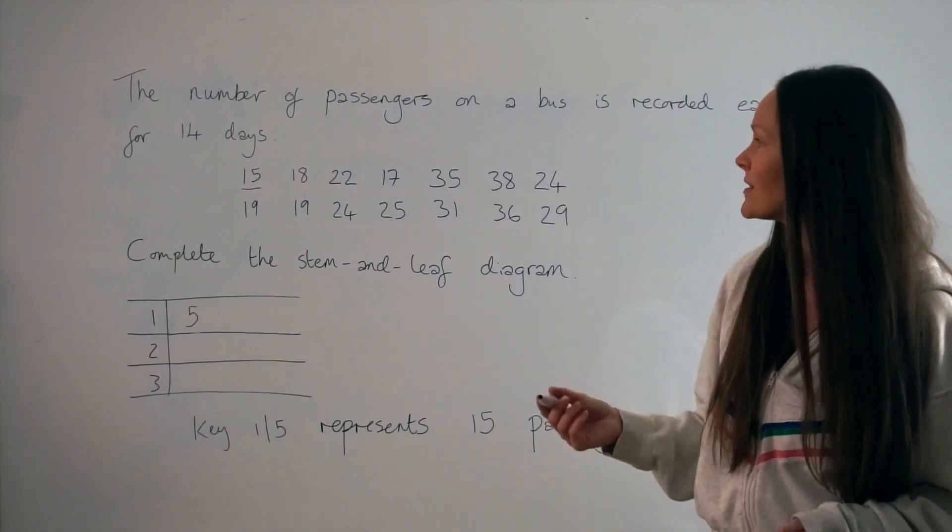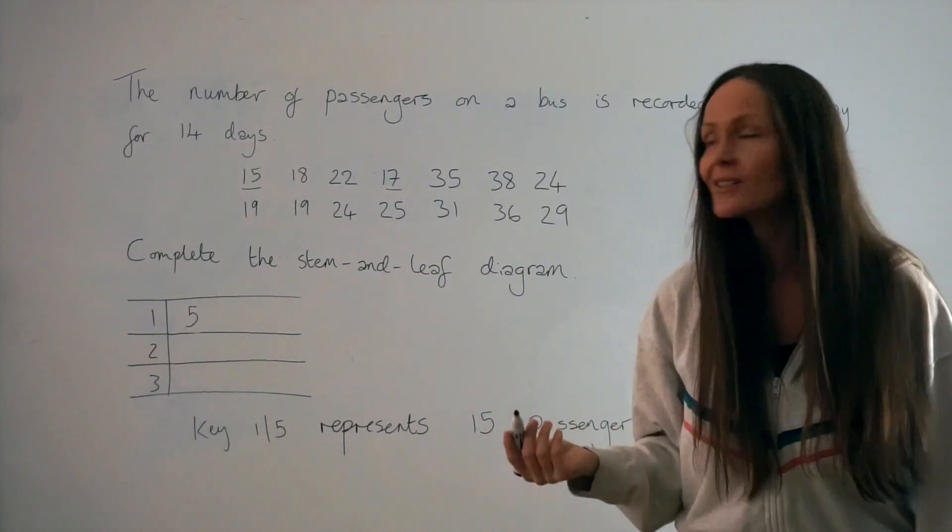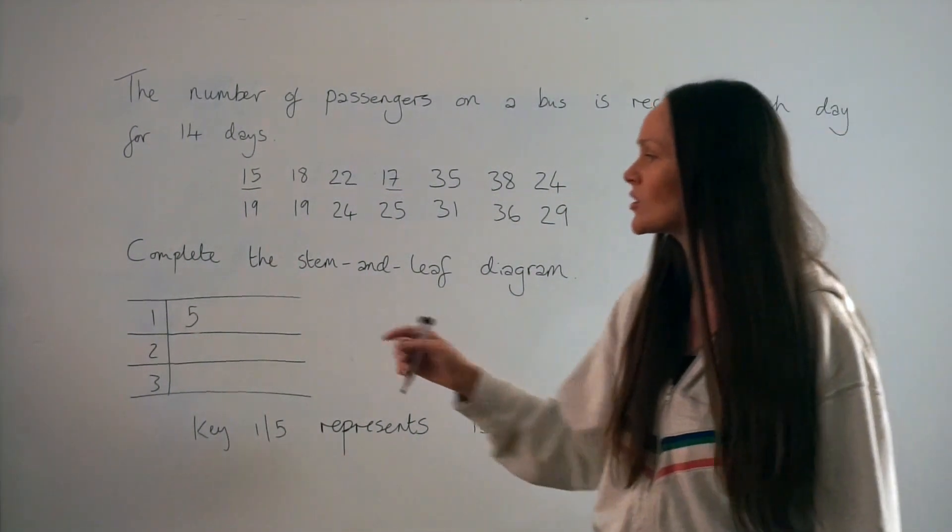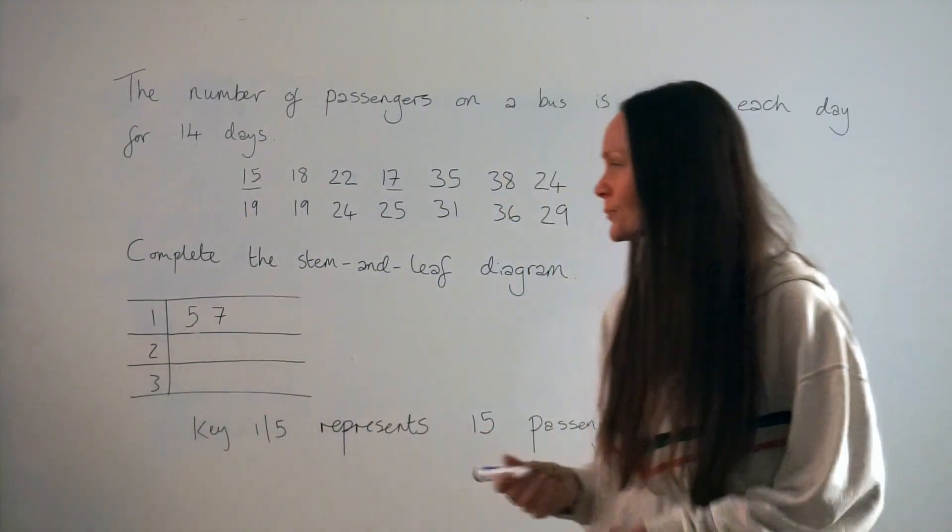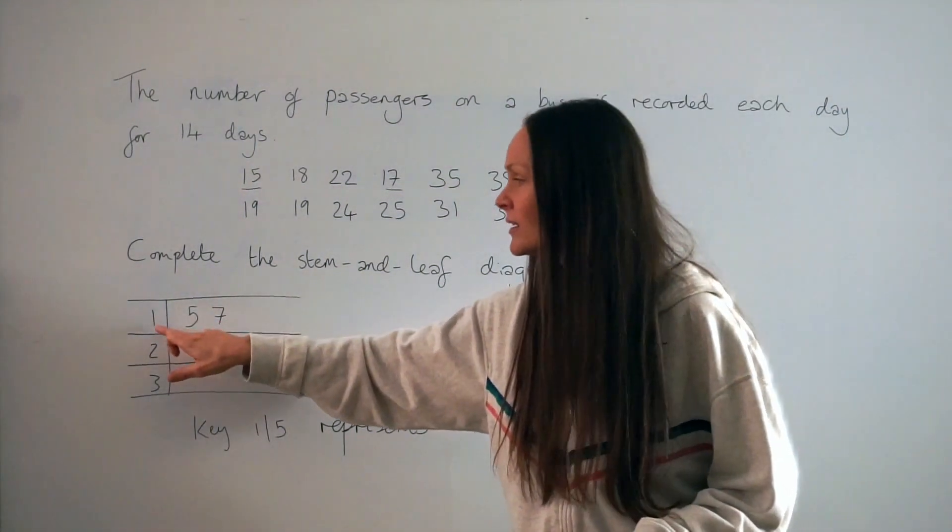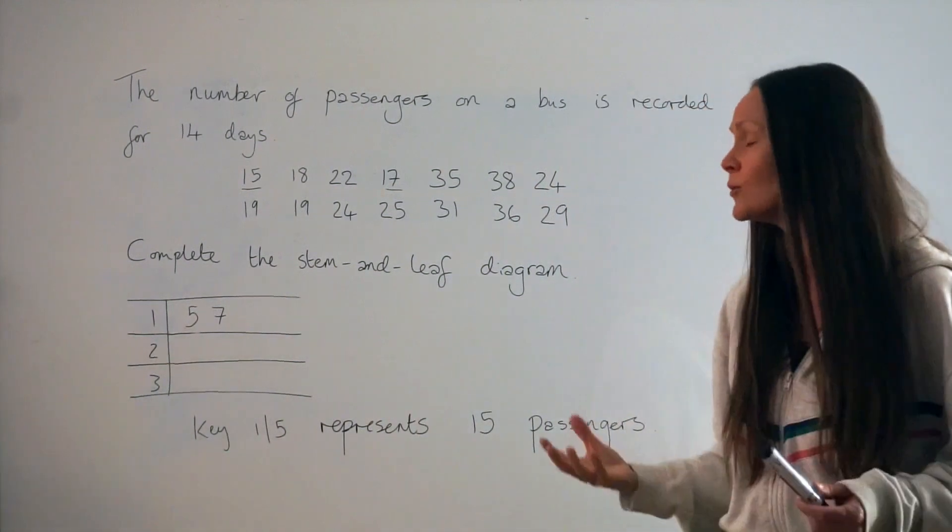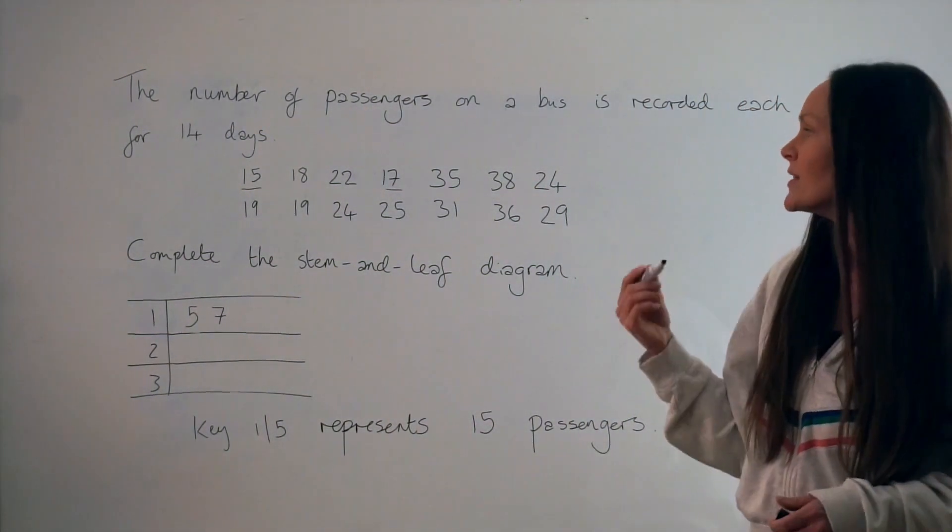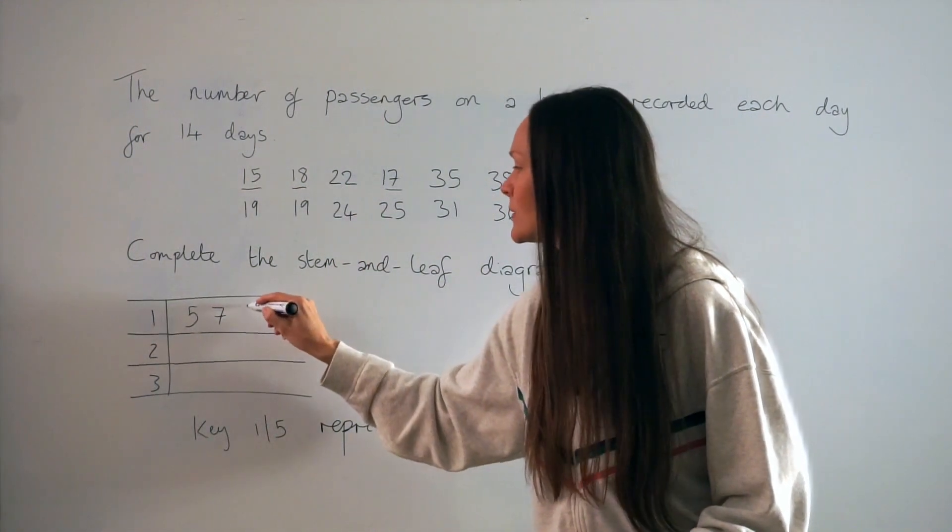The next highest number is here, 17. So this also starts with the number 1, so it needs to go in the top row again. So I write down number 7 like so. Notice how I didn't write down the number 1 again. The number 1 is already accounted for here, it's written down at the beginning. I don't need to write it down again. The next highest number is 18, so next I write down the number 8.